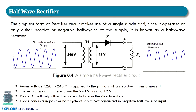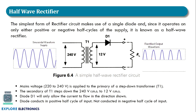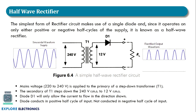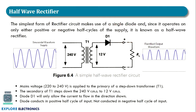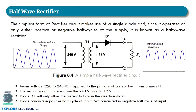When the positive half cycle is given, diode D1 conducts — the switch is closed — allowing current to flow through RL and we get the output. When the negative half cycle is given, diode D1 becomes reverse biased — the switch is open — so there is no current flow through RL and there is no output. That is why we see only half-cycle output: when the negative half cycle comes there is no output.